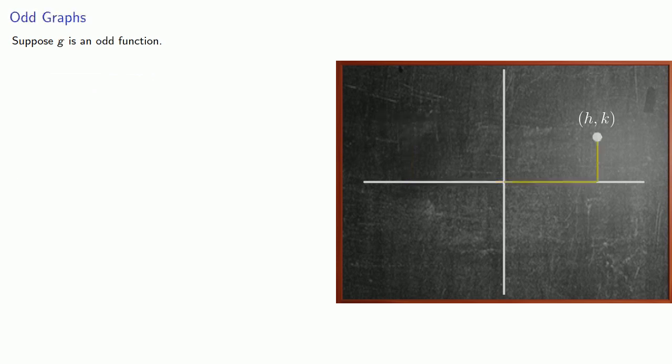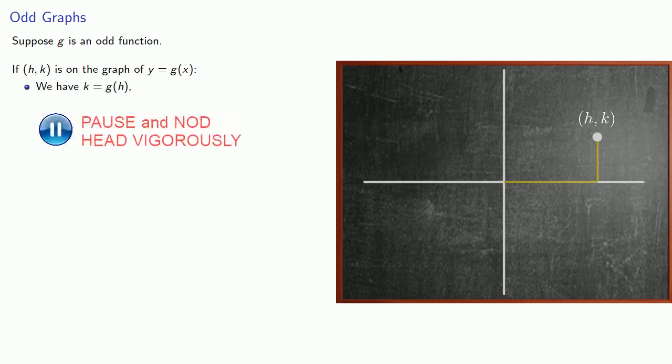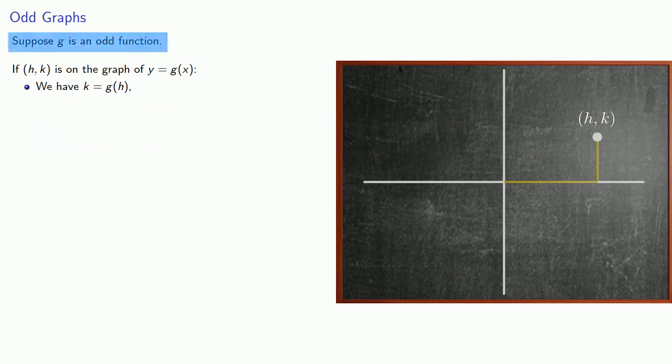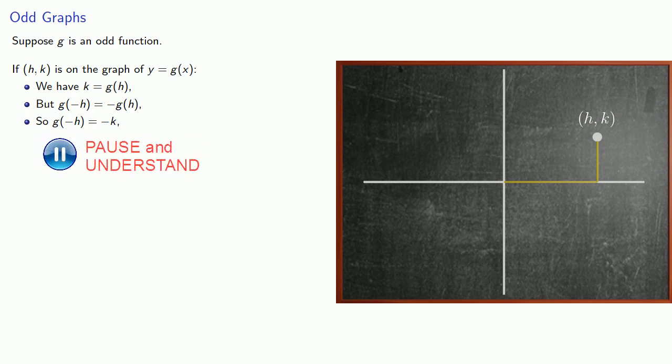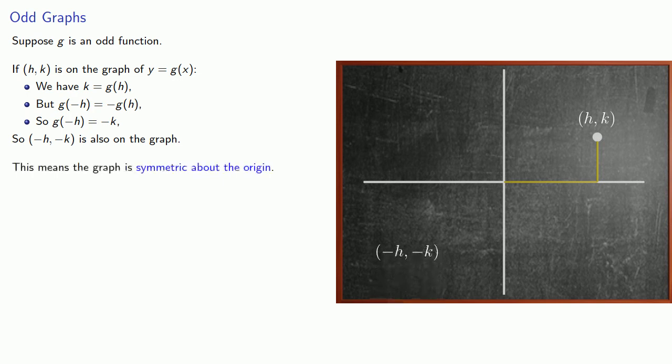Now suppose g is an odd function. Again, if (h, k) is on the graph of y equals g of x, we have k equals g of h. But since g is an odd function, g of negative h equals negative g of h. And so g of negative h is negative k. And so (negative h, negative k) is also on the graph. And this means the graph is symmetric about the origin.